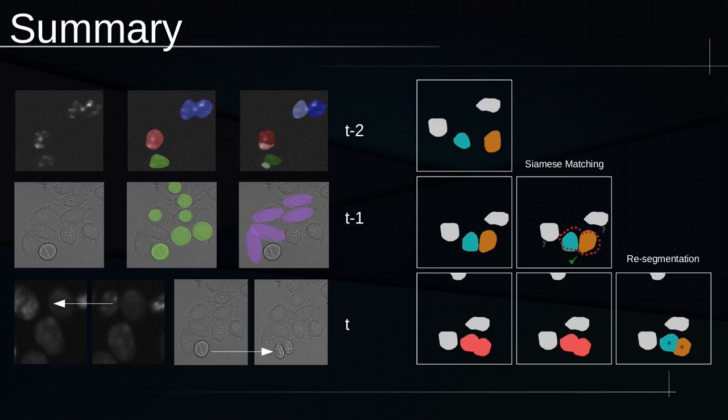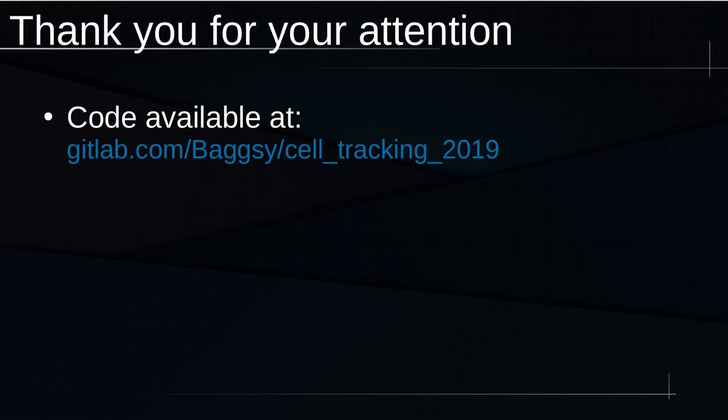So in summary, we've seen how our approach avoids the need for a trade-off or for over-parameterized approach and can actually model biological behavior. By applying Siamese margin and watershed deconvolution for resegmentation, we can correct incorrectly segmented cells. And with that, I would like to thank you very much for your attention.